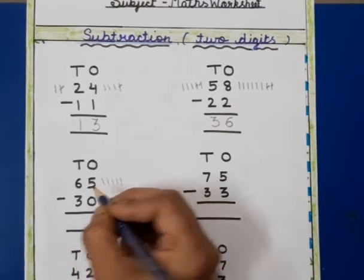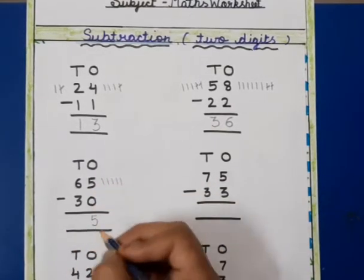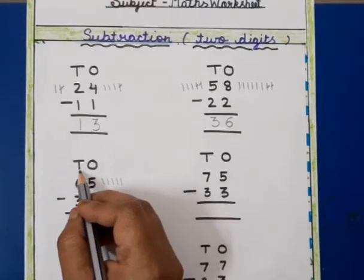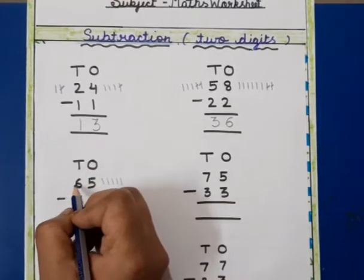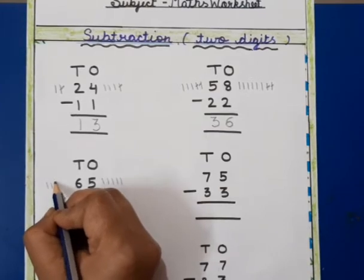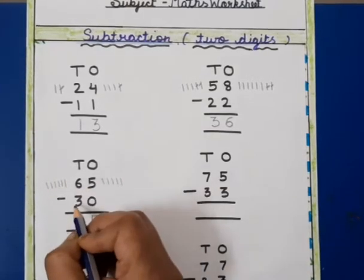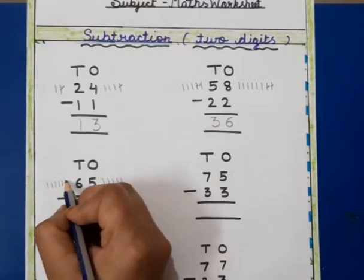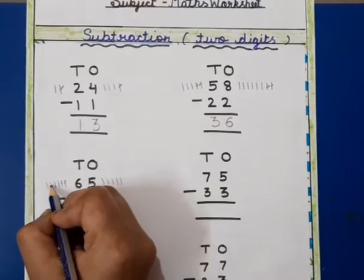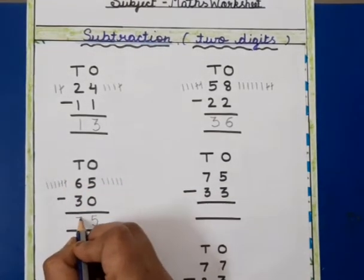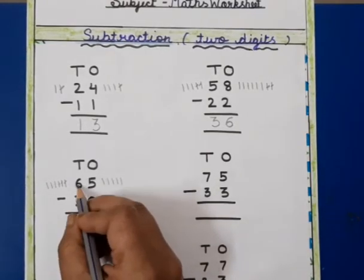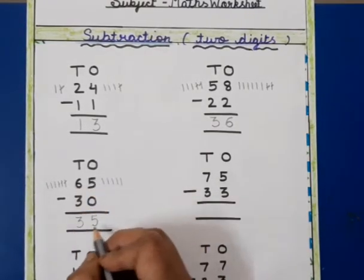Now this is tens. This is 6, we will draw six lines and we will cut three. We will get three, so we will write 3 here. When we subtract 30 from 65 we will get 35. Now next question.